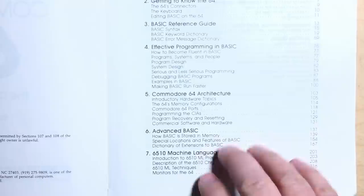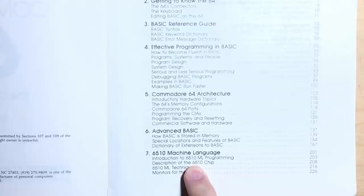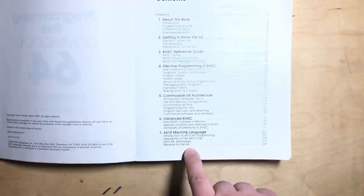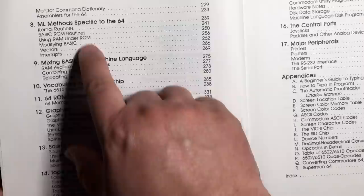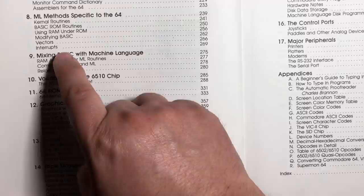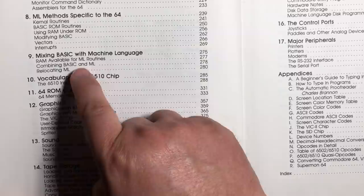I could probably just make a video about like every single thing in here and have years of videos to make, just parroting what's in his book. I try not to do that. I try to come up with my own ideas that I'm interested in, but anyway. Okay, and then finally moving on from basic, chapter seven: 6510 machine language, an introduction to the programming, a description of the 6510 chip, the 6510 machine language techniques and monitors for the 64. Monitor command dictionary, assemblers for the 64, machine language methods specific to the 64. Kernel routines, basic ROM routines, using RAM under ROM, modifying basic vectors, interrupts. Chapter nine, mixing basic with machine language. RAM available for machine language routines, combining basic and machine language, relocating machine language.